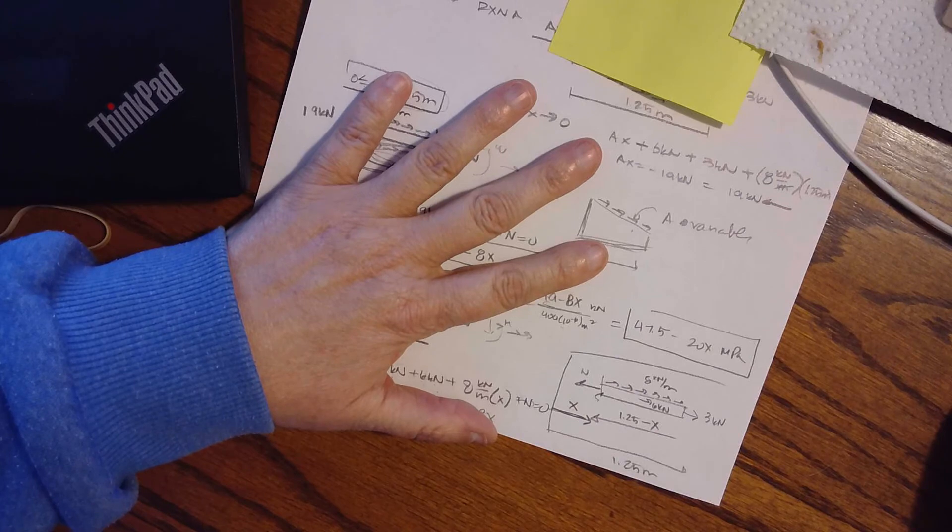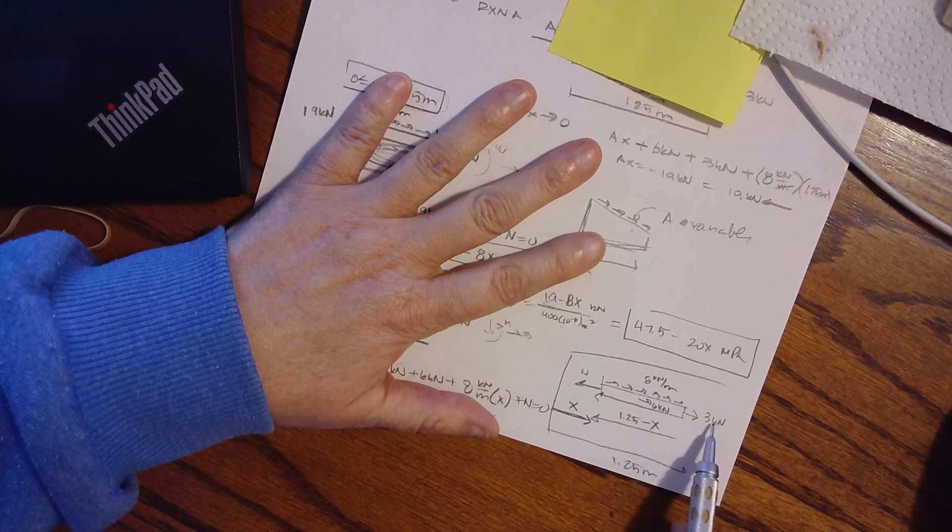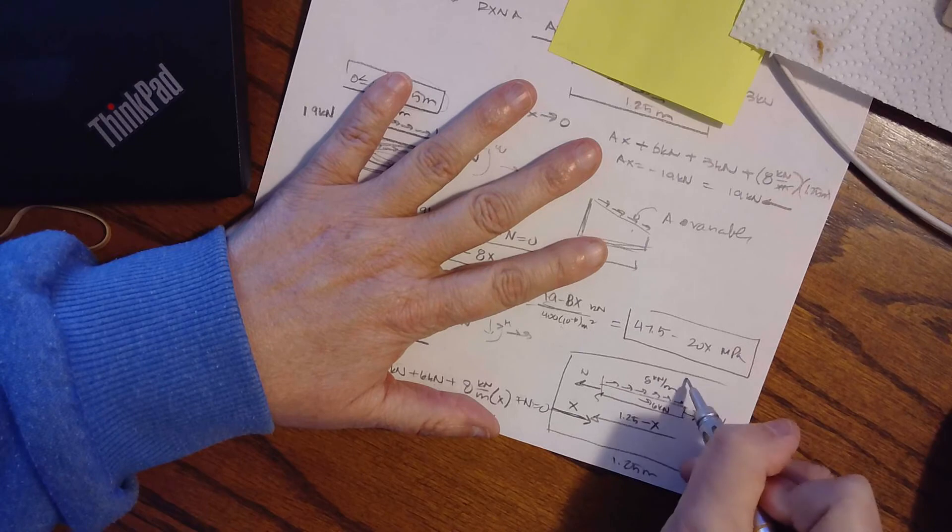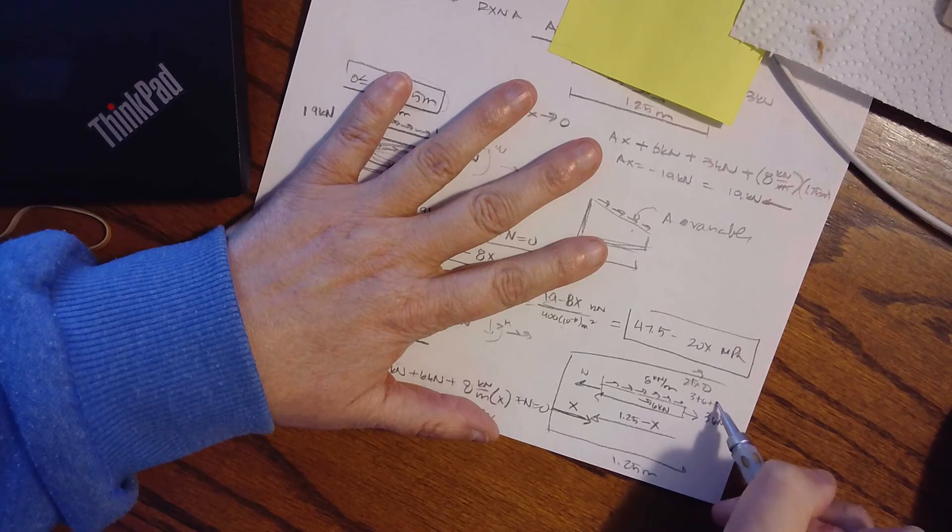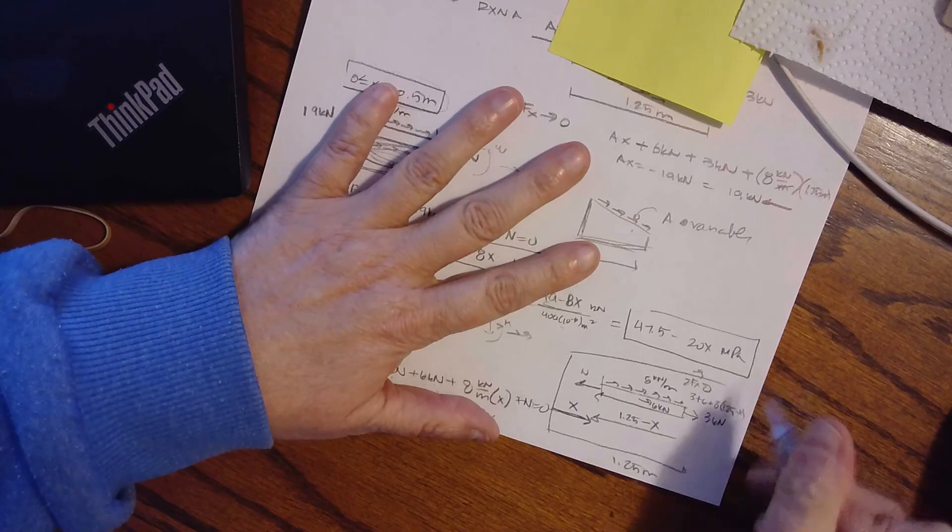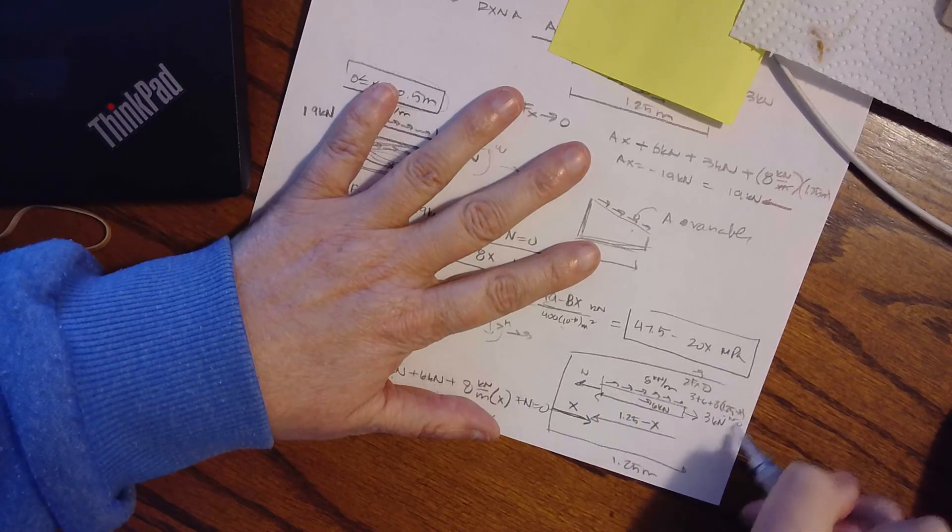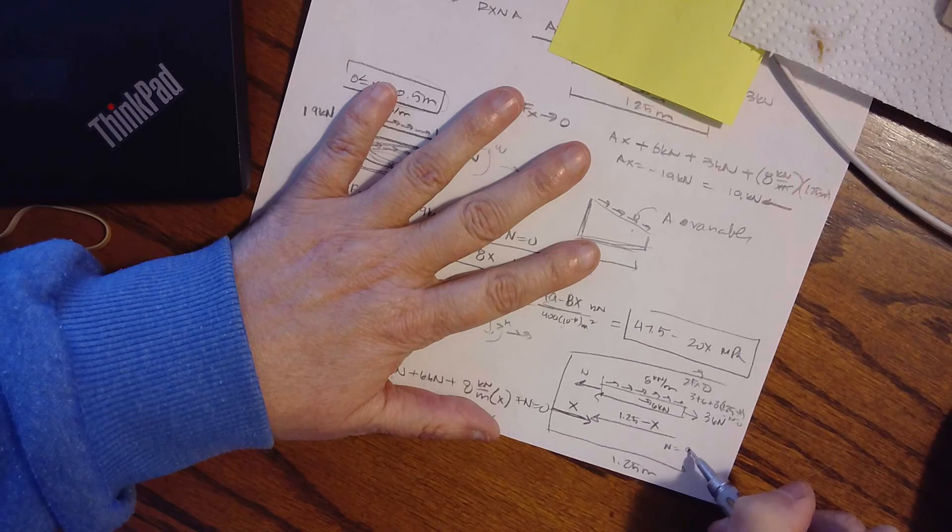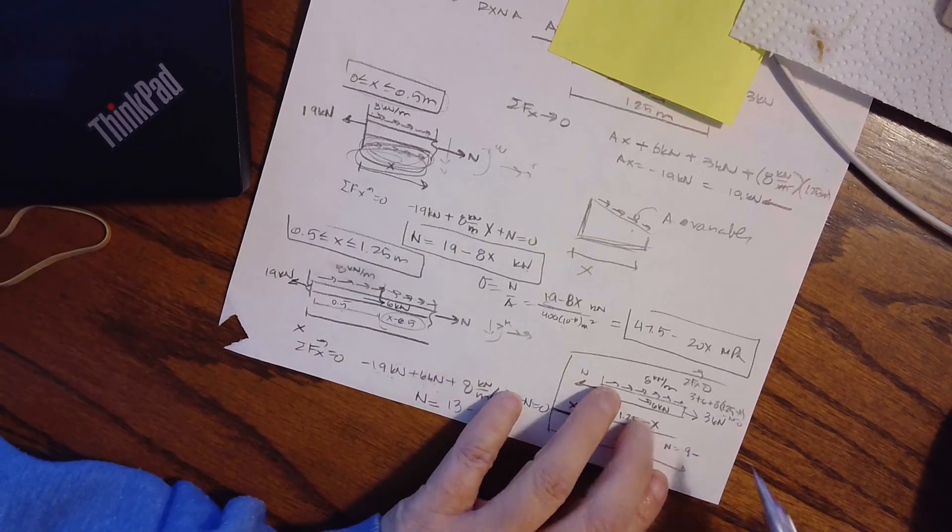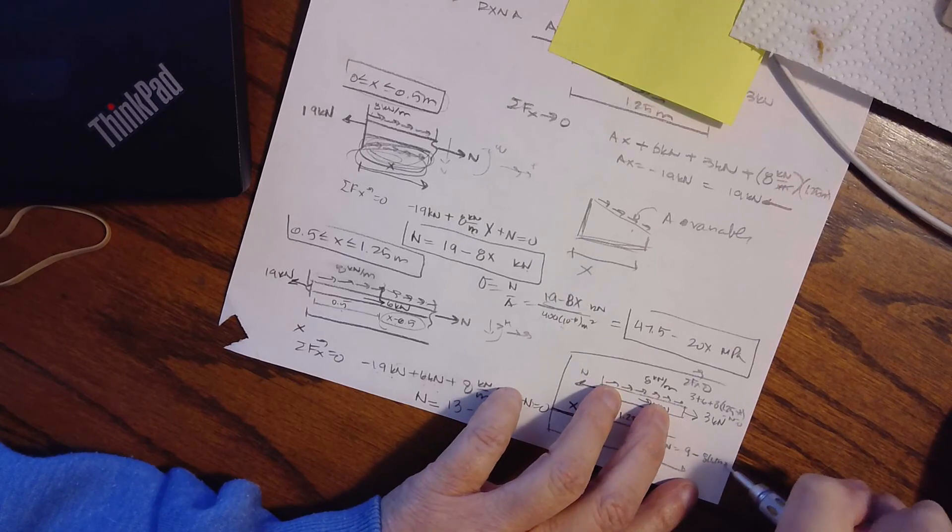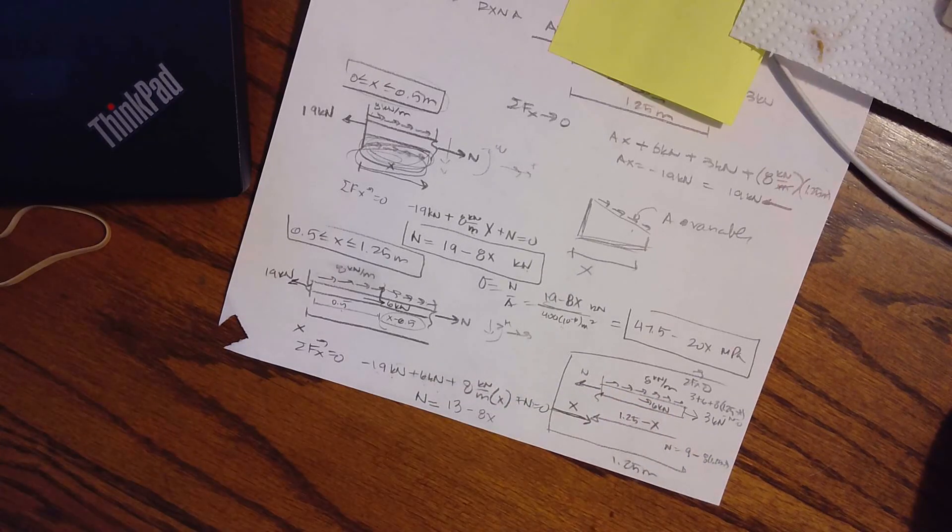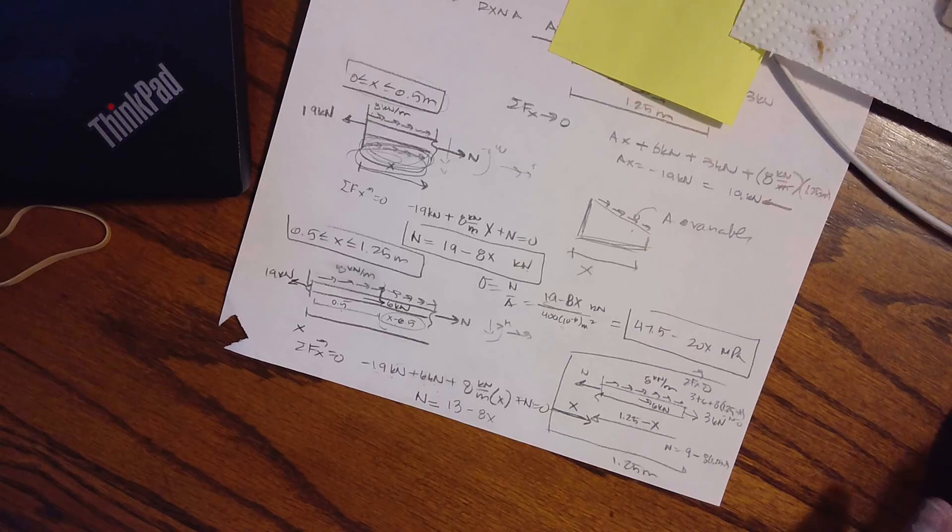And so I can set up this same equation. This time I'm going to have, if I sum forces in the X direction equals zero, I'm going to have three plus six plus eight times 1.25 minus X. Minus N equals zero. So N equals nine plus eight times 1.25 minus X. And you're going to find you get the same answer that we had before. So it's kind of cool. You can do it both ways.